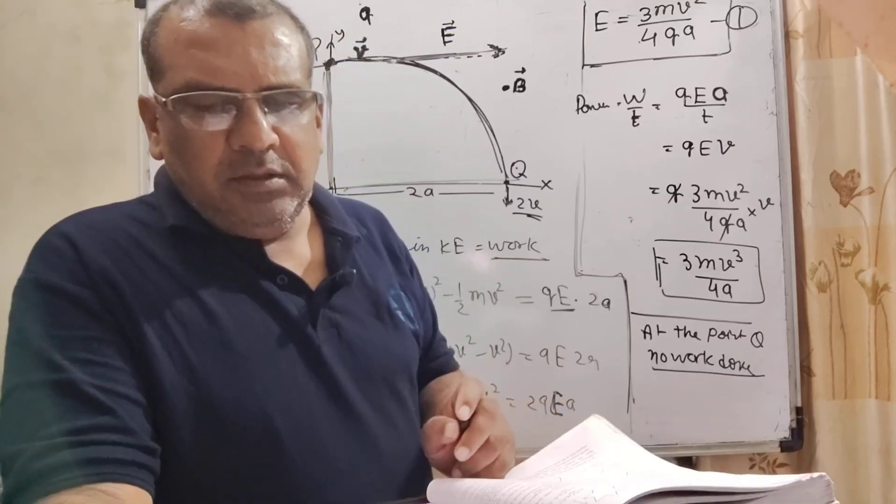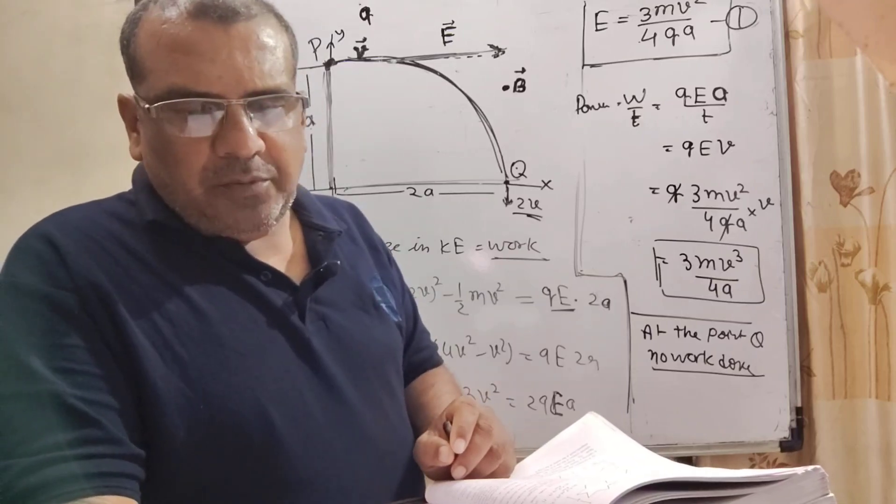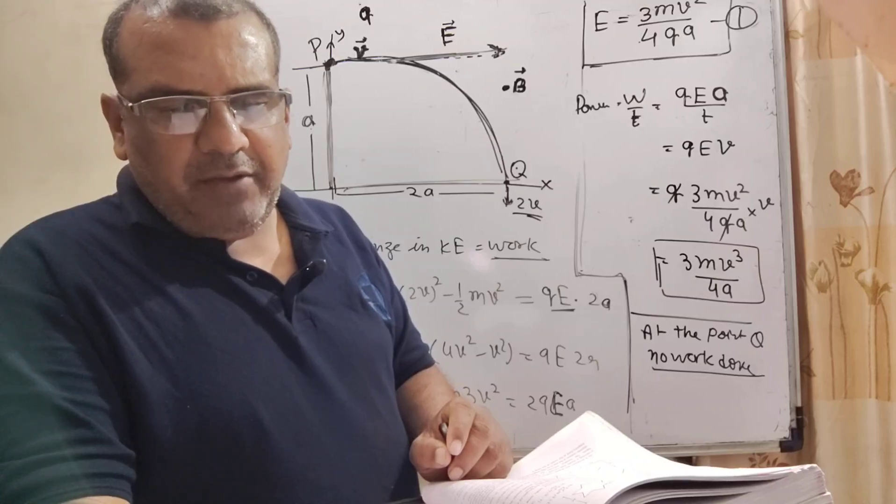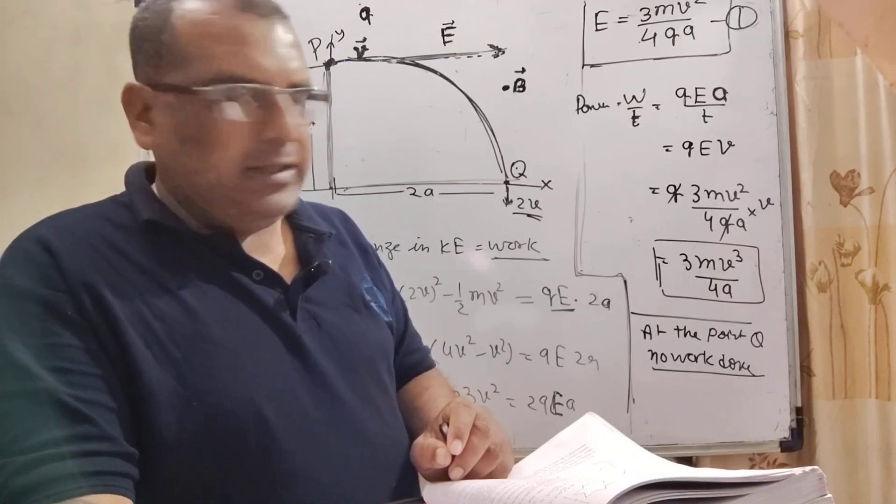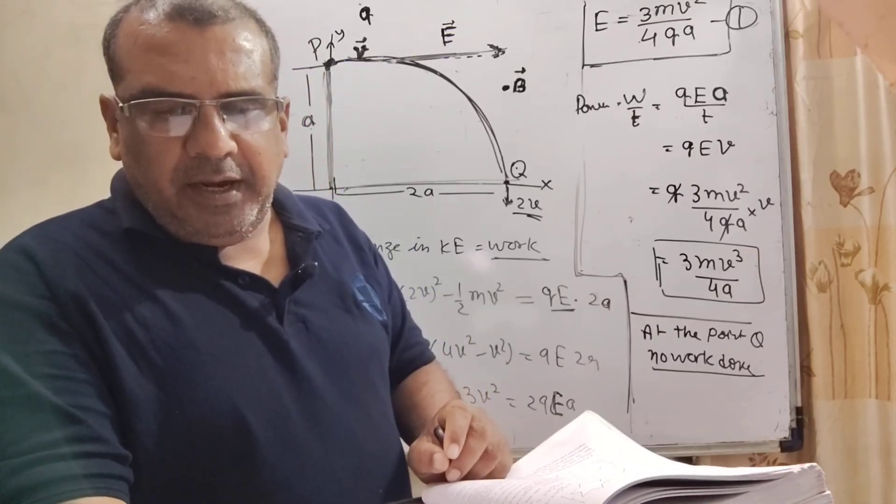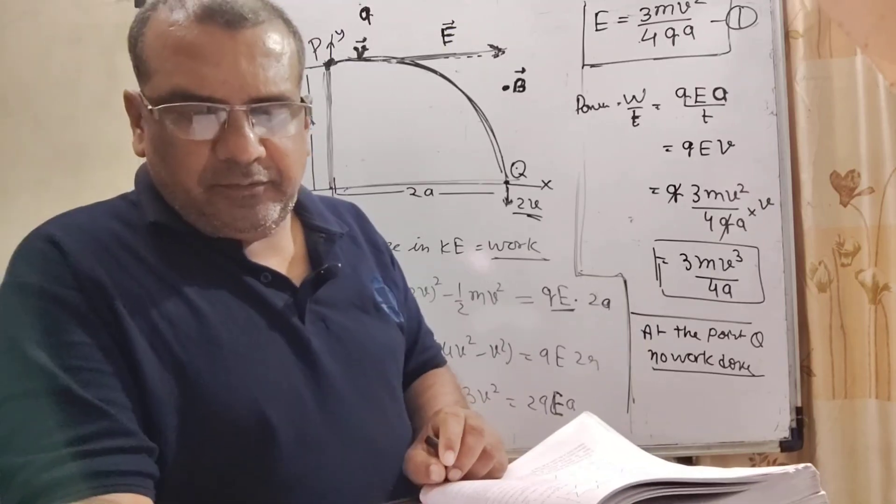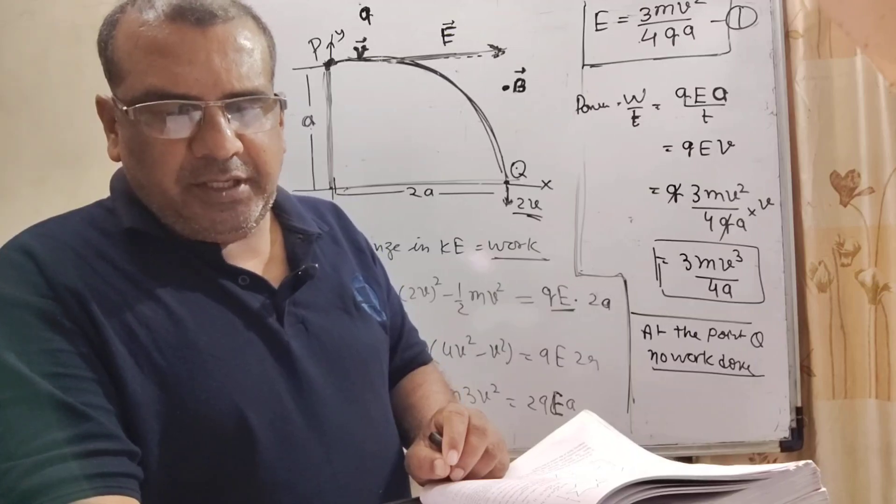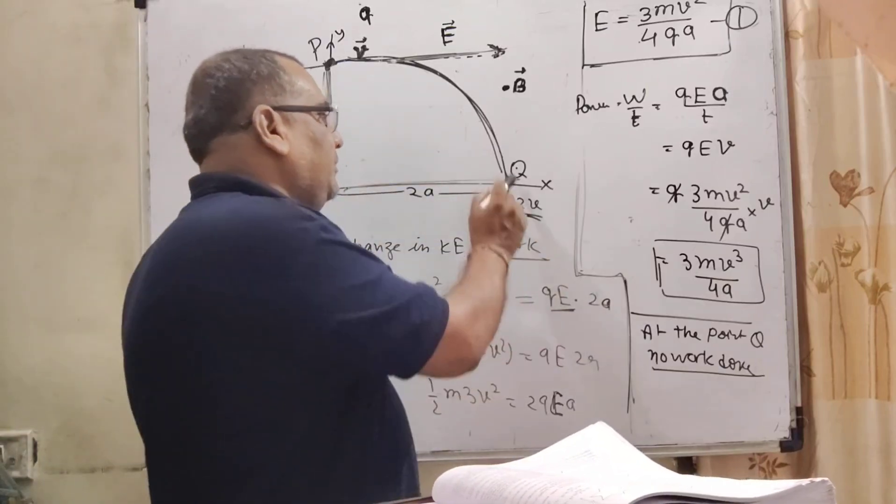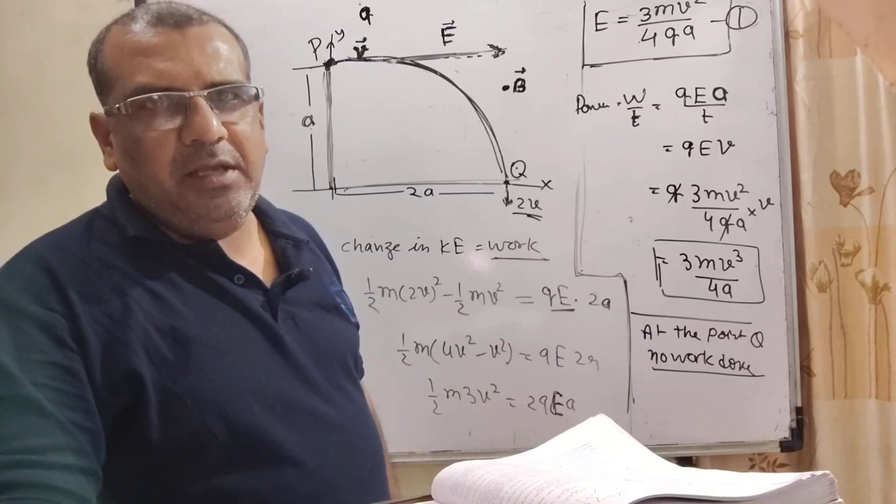So here, all these answers: option A, E equals 3 by 4 M V square over Q A is correct. Here, option B, rate of work done by electric field at P is 3 by 4 M V cube over A, that is also correct. And here, option C, rate of work done by electric field at P is zero - this option is wrong because we have already calculated it at P. And last, option D, rate of work done by both fields at Q is zero - yes, this option is correct because no work is done at point Q. So here, correct options are A, B, and D. I hope you understood this question.